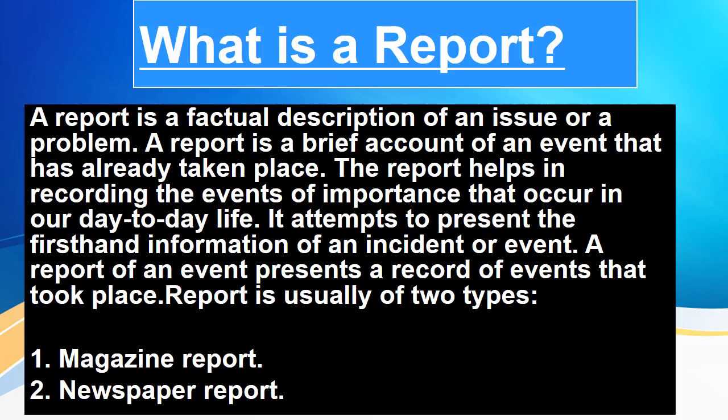A report is usually of two types. Number one is the magazine report, in which we usually write about events that took place in school — exhibitions, fun fairs, Independence Day celebrations, annual day functions, visits to a museum, and such things. In this video, we are going to learn how to write a report for a magazine. The second type is the newspaper report, in which we write about accidents, thefts, bank robberies, fires, and any unplanned events — that we are going to learn in the next video.